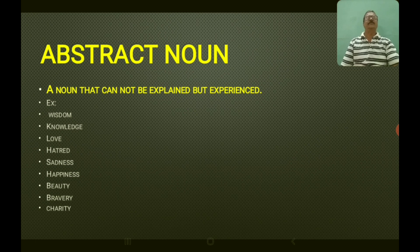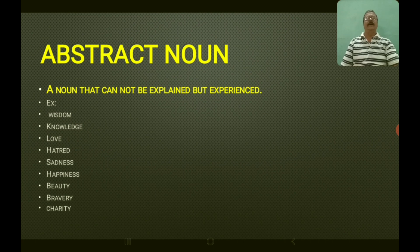Next is abstract noun — a noun that cannot be explained but only experienced. Examples: wisdom, knowledge, love, hatred, sadness, happiness, beauty, bravery, charity. These are some examples of abstract nouns.